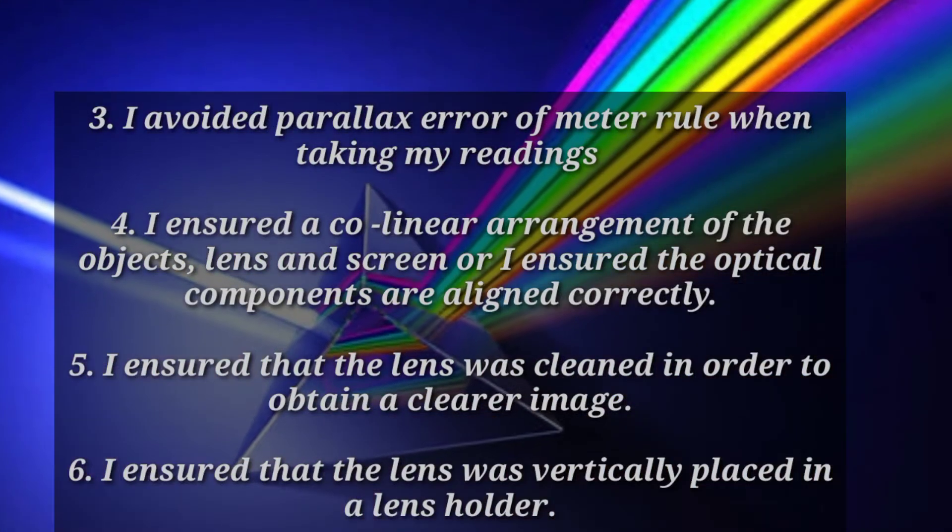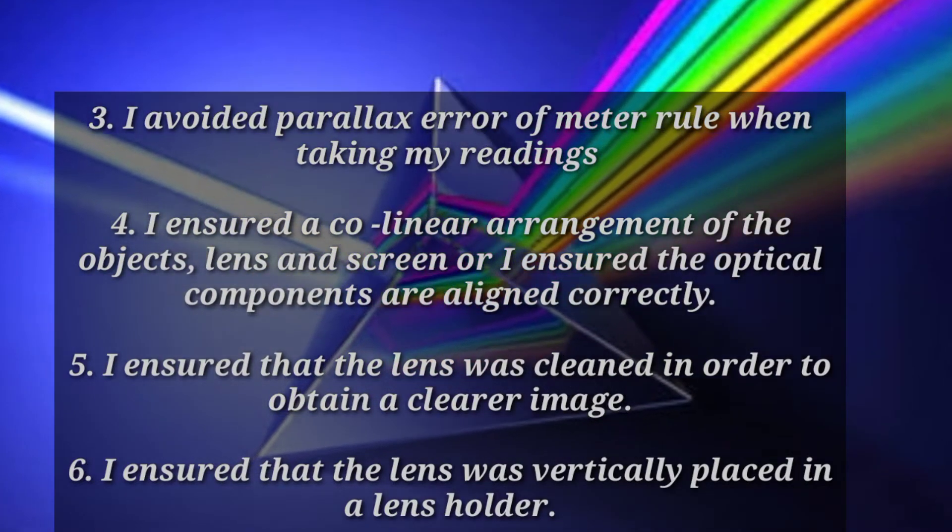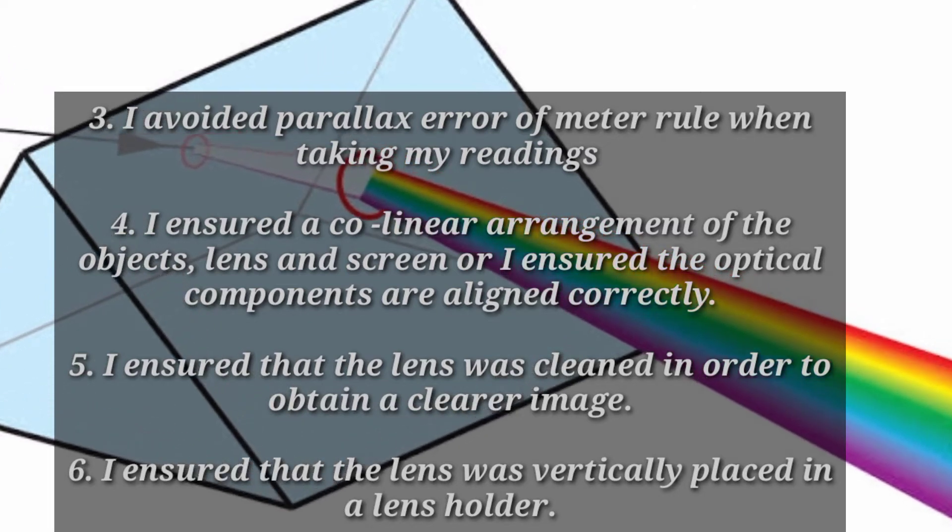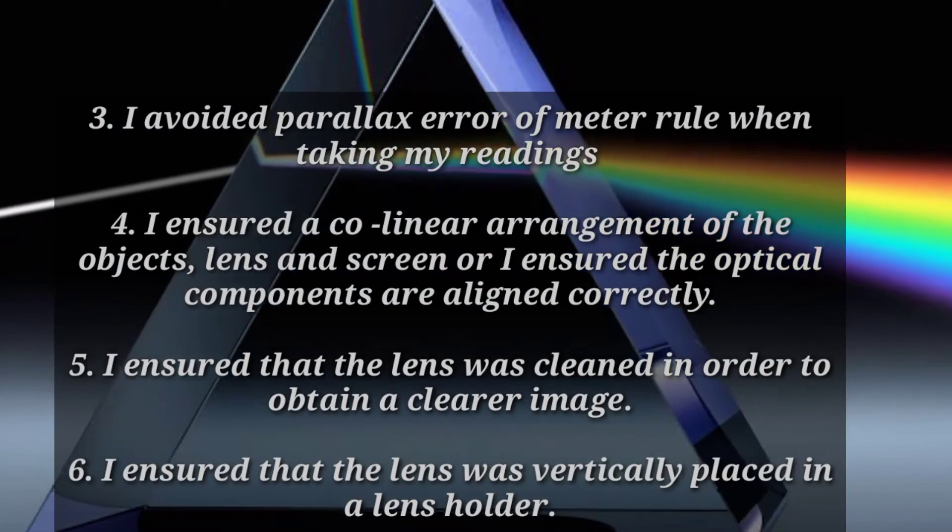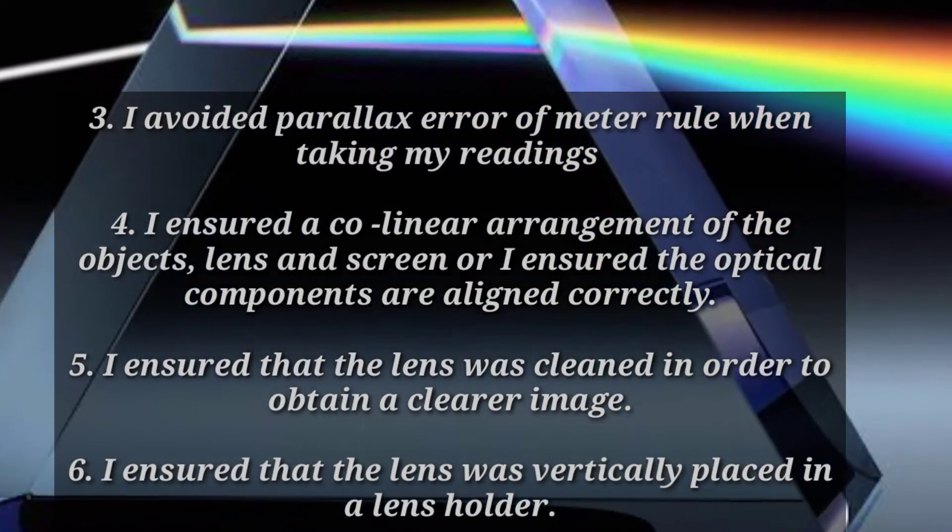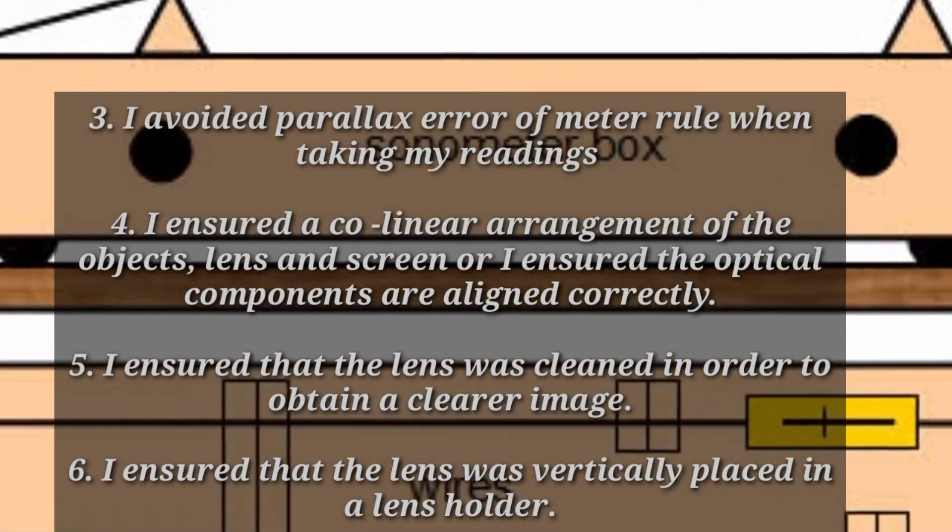Precaution 3: I avoided parallax error of the meter rule when taking my readings. Precaution 4: I ensured a collinear arrangement of the objects, lens, and screen, or I ensured the optical components are aligned correctly. Precaution 5: I ensured that the lens was cleaned in order to obtain a clearer image.